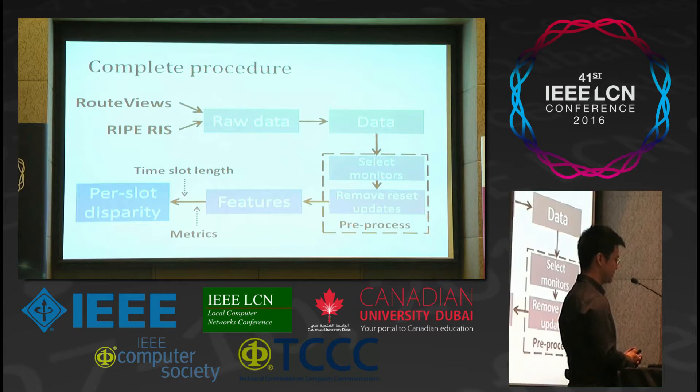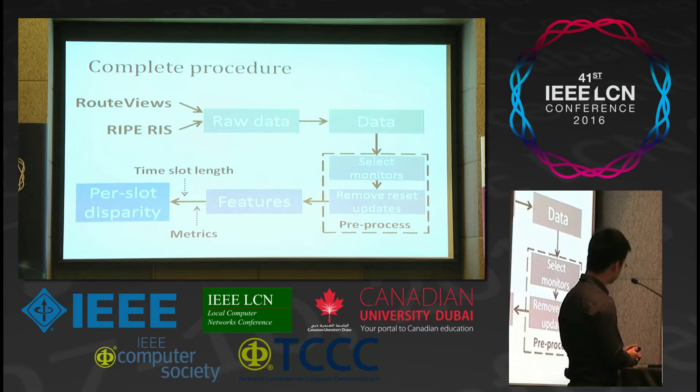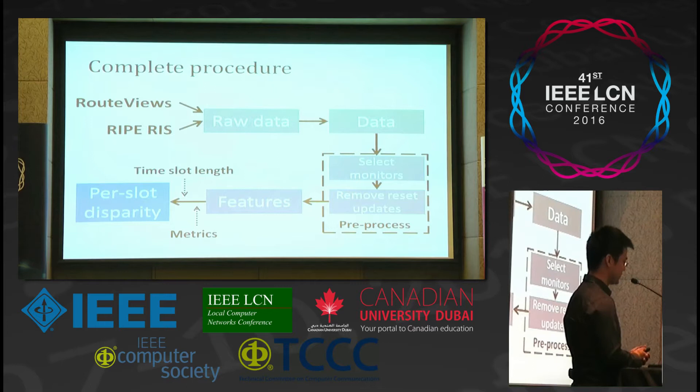This is the complete procedure of our work. First, we get data from RouteViews and RIPE RIS, parse it into human-readable data. In the pre-processing step, we select suitable monitors and remove reset updates. Then we extract features from the processed data. After setting the time slot duration and metrics, we obtain the per-slot disparity of these features.